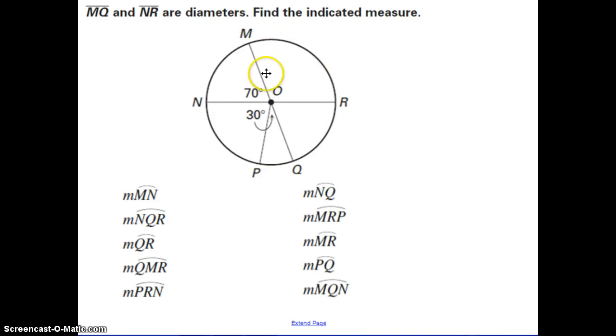In this set of examples, it tells us that MQ, this line, and NR are diameters, and I want you to find the indicated measures. The way that we do this, I think the easiest, is to find all of the angles and the arc measurements first, then you can write down the ones that you need. So to start off right here, we have a set of vertical angles. Remember, those are angles opposite from each other, from two intersecting lines, so this is going to be 70 degrees. Now another thing you should notice is that here we have a line, and we know a line is 180 degrees, so this angle over here is going to be 110, because this one is 70. Now lastly, we have this angle is 30 degrees,